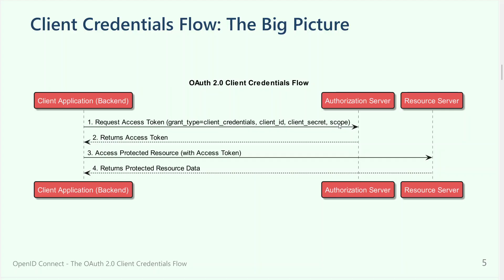Don't confuse scopes with user permissions. You can have permissions for a person, and you can have permissions for a client — the application. They are completely different. It's what the user can do versus what the application can do. For example, you can be an admin, but the application you are using might not have permission to create things on a resource server, even if you are an admin. There is no intersection between these things — they are completely different entities in OAuth 2 flows.